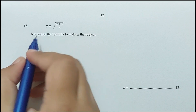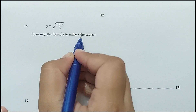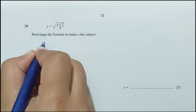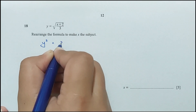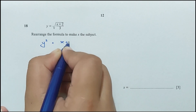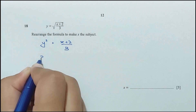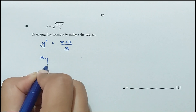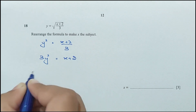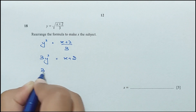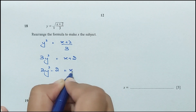Question 18: rearrange the formula to make x the subject. Squaring both sides: y² = (x + 2)/3. Cross-multiplying: 3y² = x + 2. Therefore x = 3y² − 2.